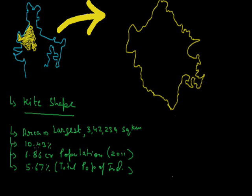10.43% of India's land area is Rajasthan, with most population living in the eastern part because the western part is an arid region. The density is also 201 persons per square kilometer according to the census of 2011.